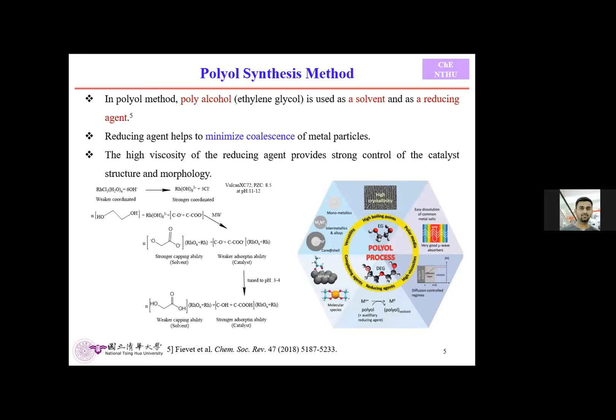Here is a brief overview of the polyol synthesis method. We take the precursors of both metals and use a polyalcohol, which acts as both a solvent and a reducing agent. By maintaining the pH and using a microwave synthesizer, I prepared the catalyst. In this method, most of the metals settle on the surface of the support. Compared to chemical fluid deposition and wet impregnation, this method produces more oxide species, which helps hydrogenation since hydrogen spillover is greater, making the reaction proceed faster.